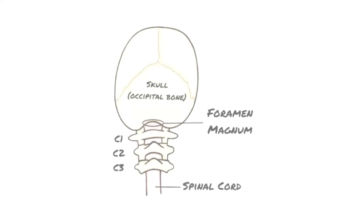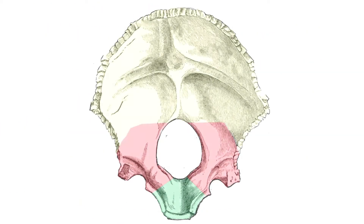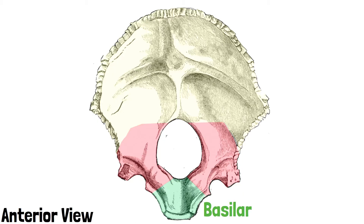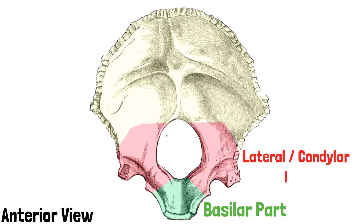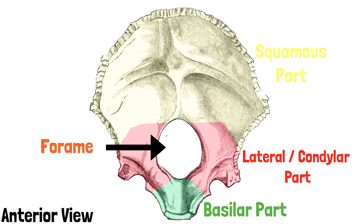The foramen magnum functions as a passage of the central nervous system through the skull, connecting the brain with the spinal cord. Looking at the anterior view of the bone: the part shaded in green is the basilar part, in red are the two lateral parts (also known as the condylar parts), and the part shaded in yellow is the squamous part. All of these parts contribute to form the foramen magnum.